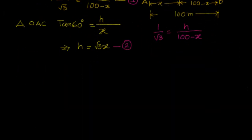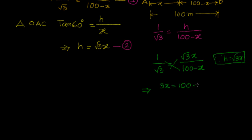I will simplify this. We know h equal to root 3x, so I can say 1 by root 3 equal to root 3x by 100 minus x, since h is equal to root 3x. That is our equation 2. If you simplify this, cross multiply, you get 3x equal to 100 minus x, that is 4x equal to 100, that is equal to x equal to 25.